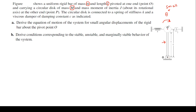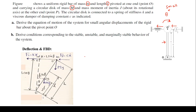The center of mass of the disk is at length L from point O, and the center of mass of the rigid rod is at l/2 from point O. When the assembly is displaced clockwise, the spring will be stretched, exerting a tensile force on the disk, while the damper will be compressed, exerting a compressive force at point O'.